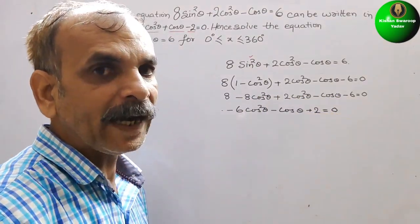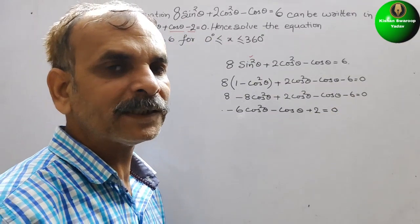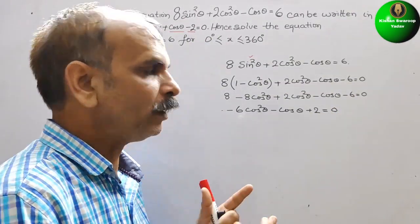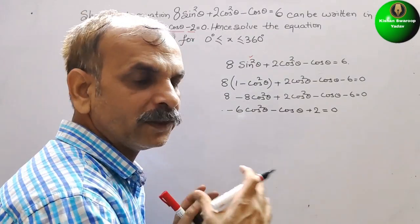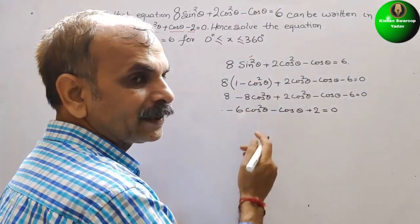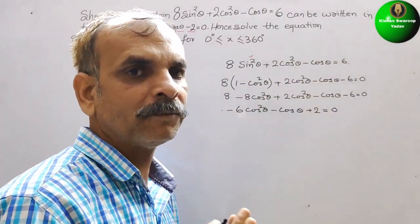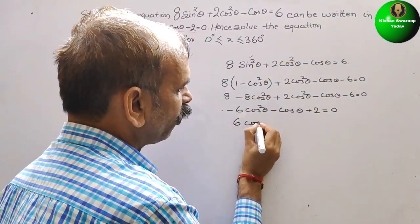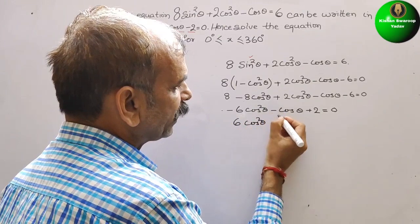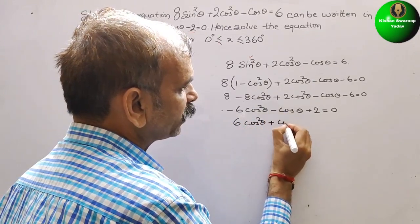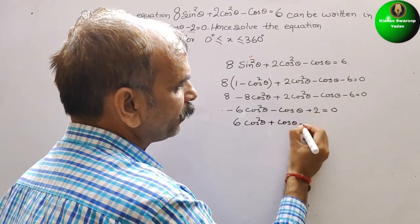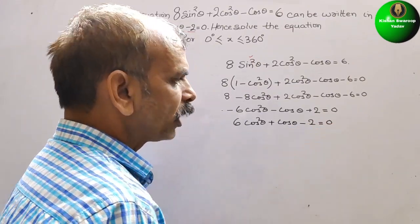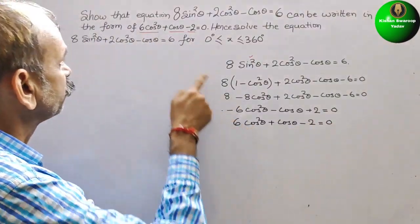Since the equation should not start with a negative, we multiply through by -1 (divide by -1). This gives us 6cos²θ + cosθ - 2 = 0, which matches the required form.